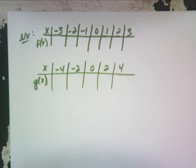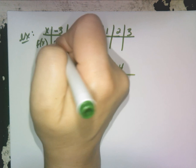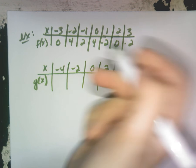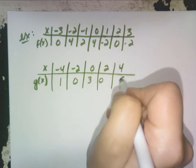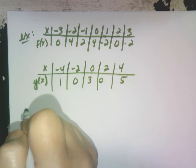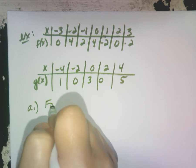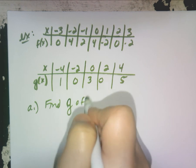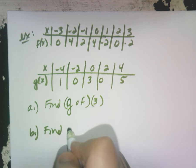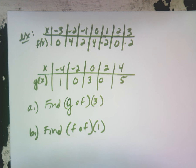I'm going to write two tables. These are definitely functions — the x's aren't repeating. I only want to do two problems here and then we're done with this first lesson. We're going to find gof(3) and fof(1).